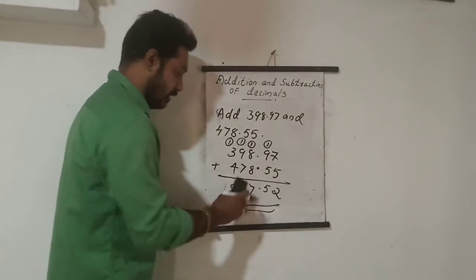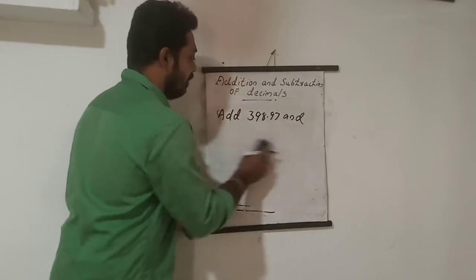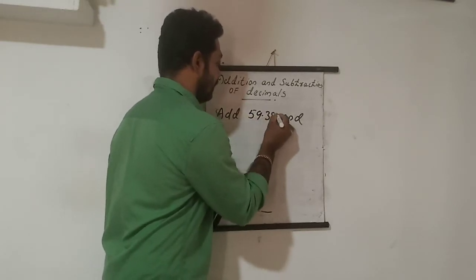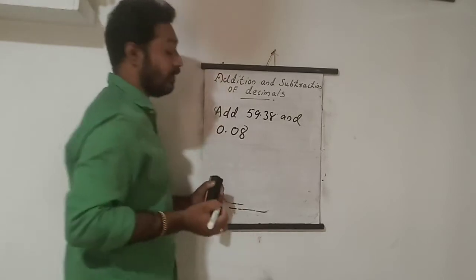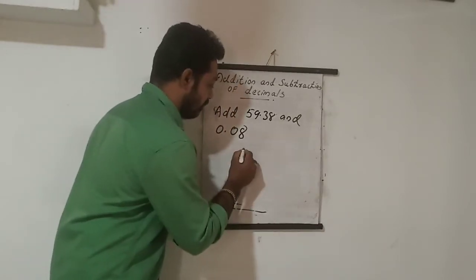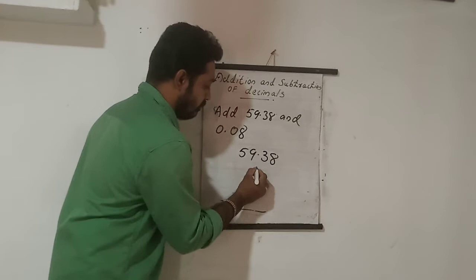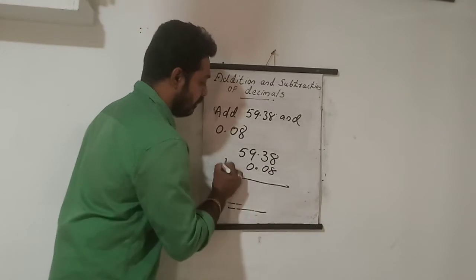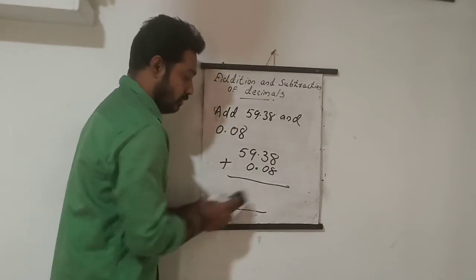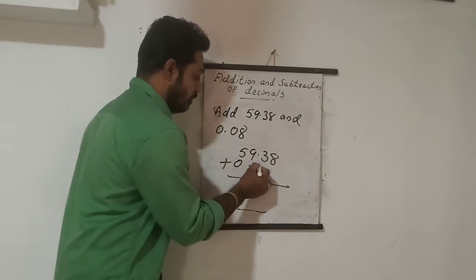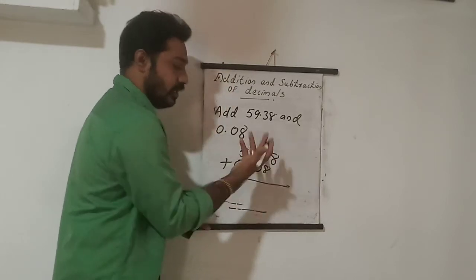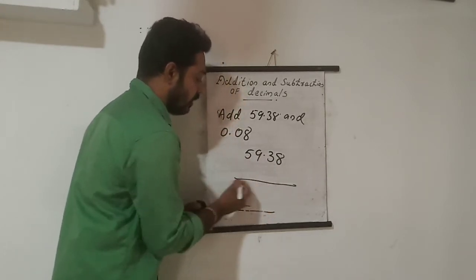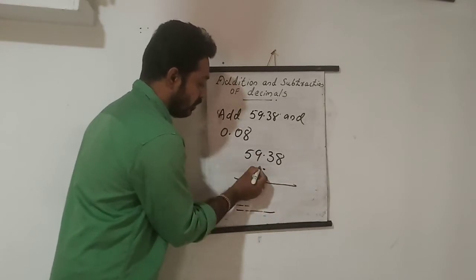Now what happens if we have different place value numbers? For example, add 59.38 and 0.08. The first number is 59.38. Now for the second number, 0.08 — the point has to line up the same way, meaning the decimal points must be on the same line.